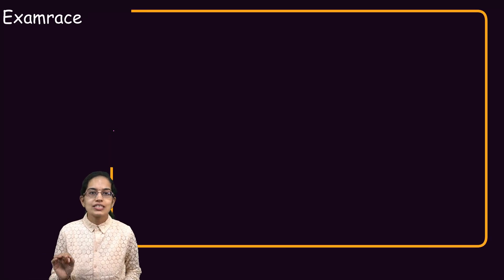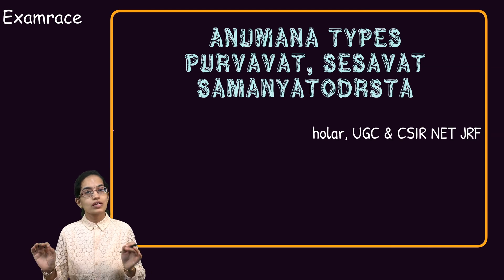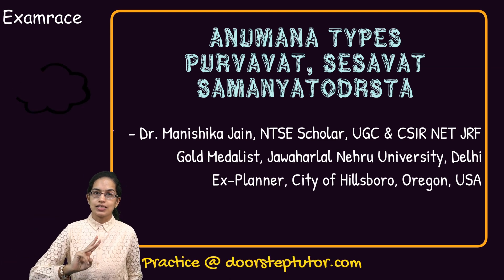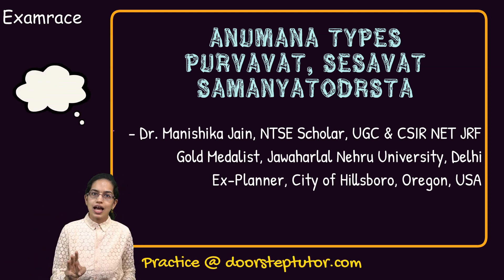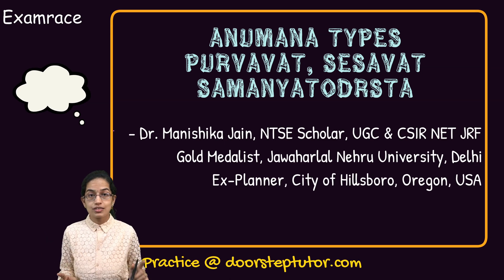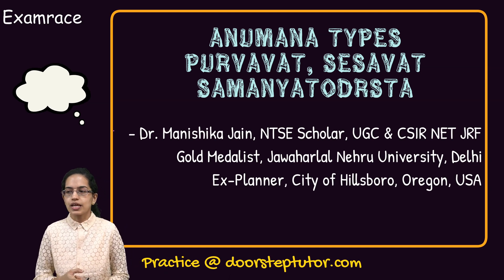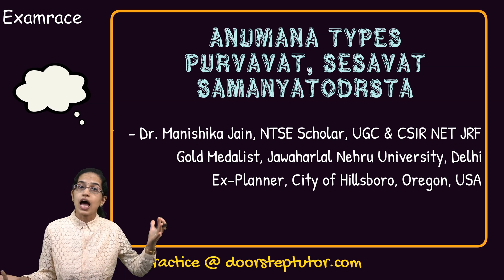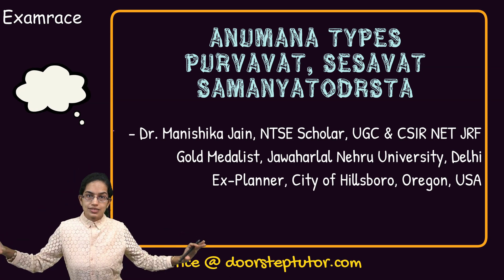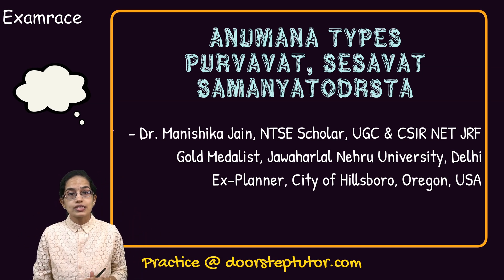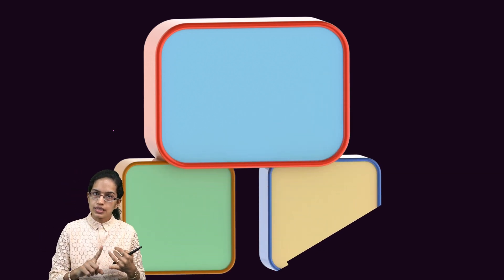Let's understand the various types of Anuman based on causal relations. As we have understood in our previous lectures, Anuman could be classified based on three criteria, and causal relation is one of those criteria. Based on causal relations, we have three types: Purvavat, Sesavat, and Samantiyodrasht. All three are very important to understand because they are based on distinctions of Vyapti, as given by Gautama as well as under Sankhya Darshan.